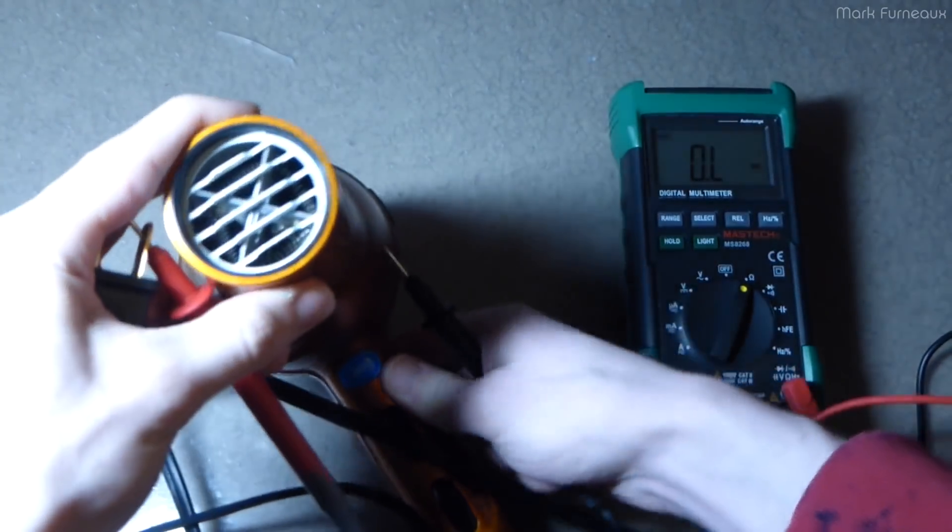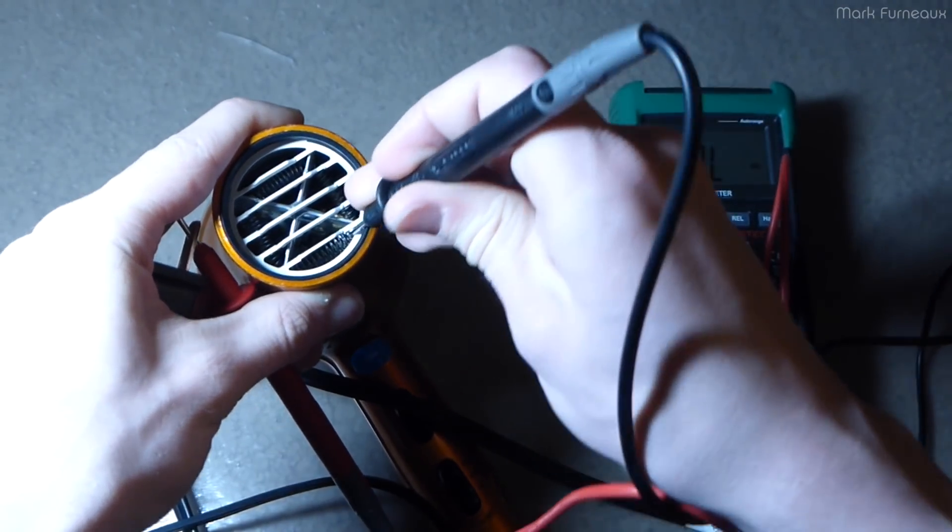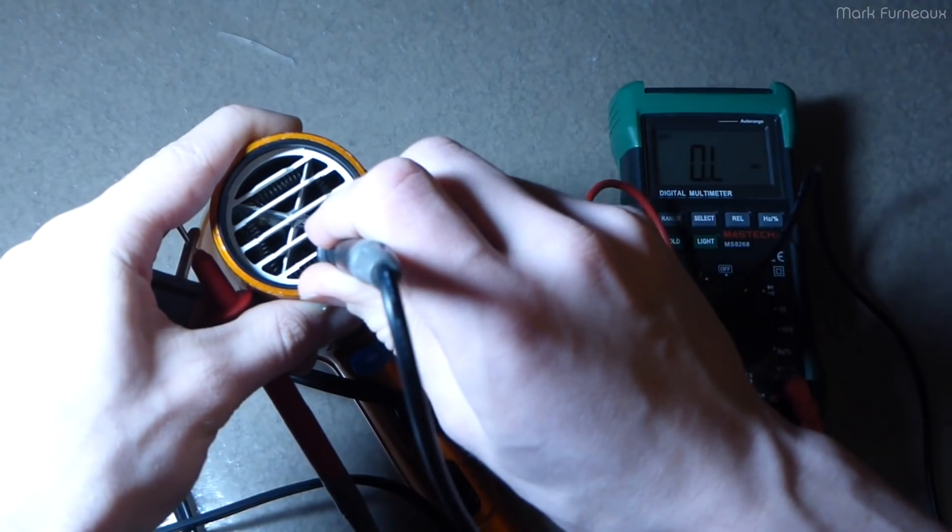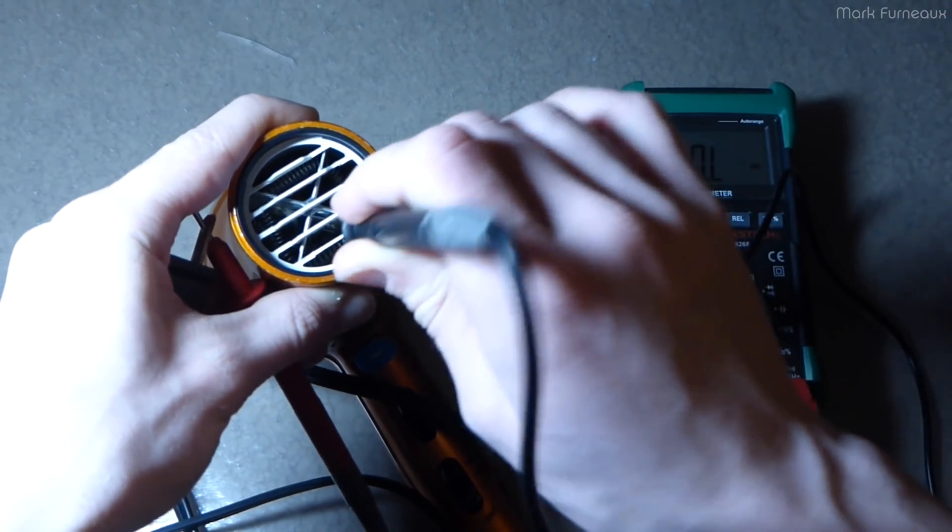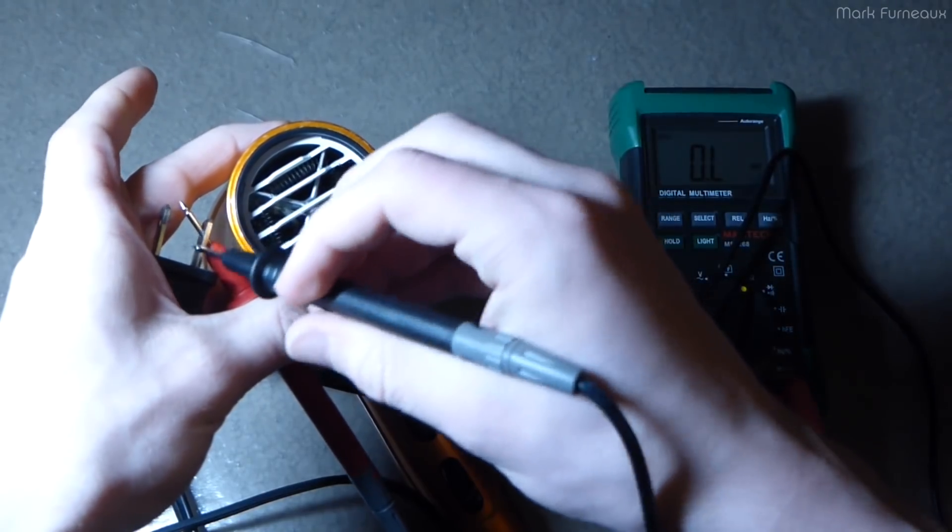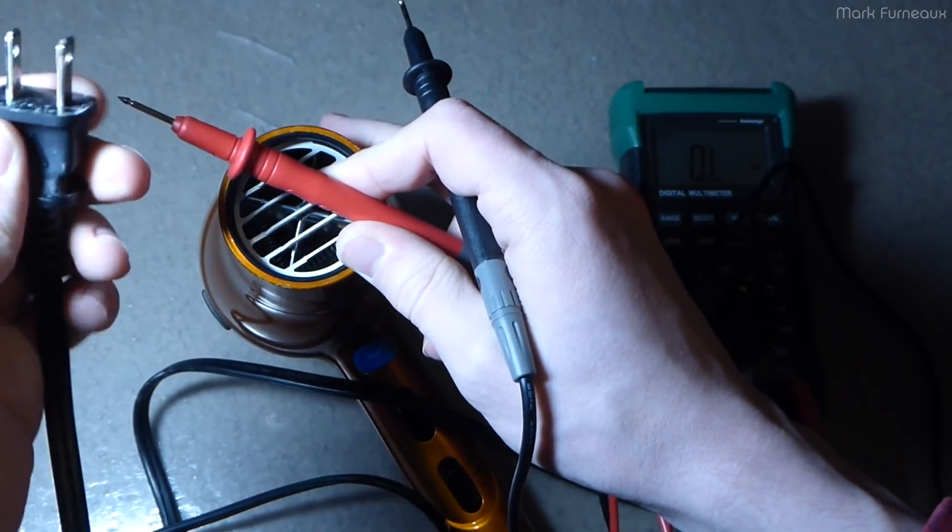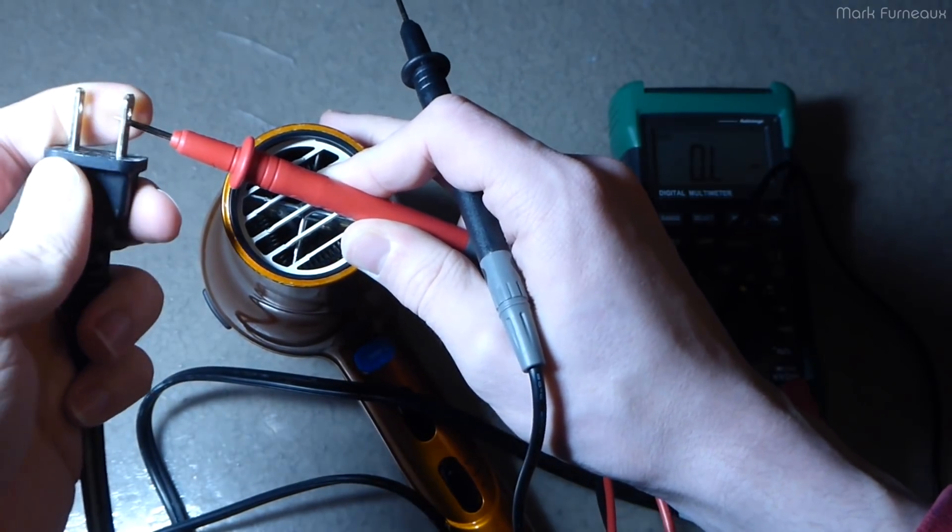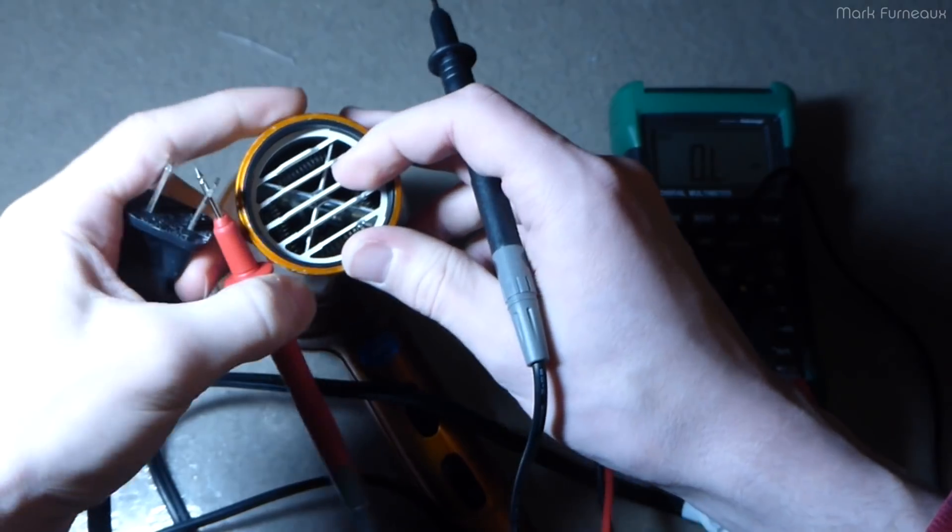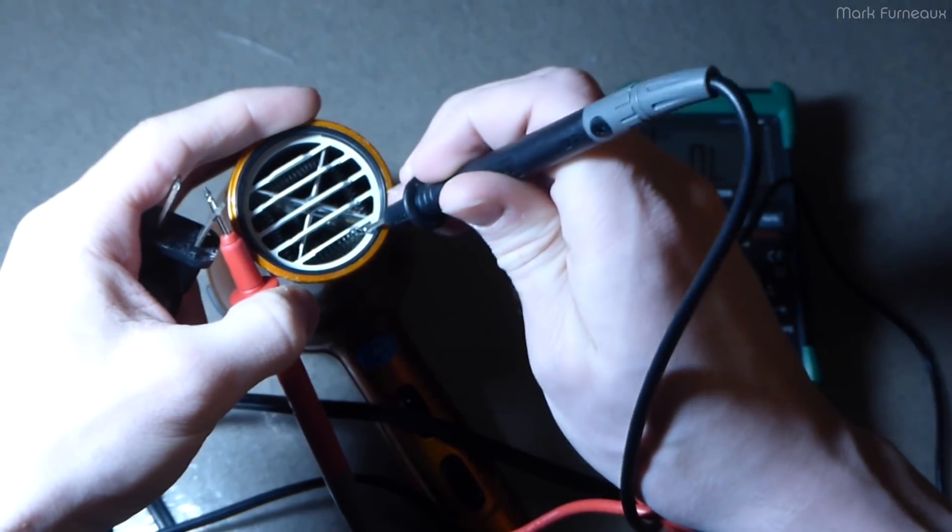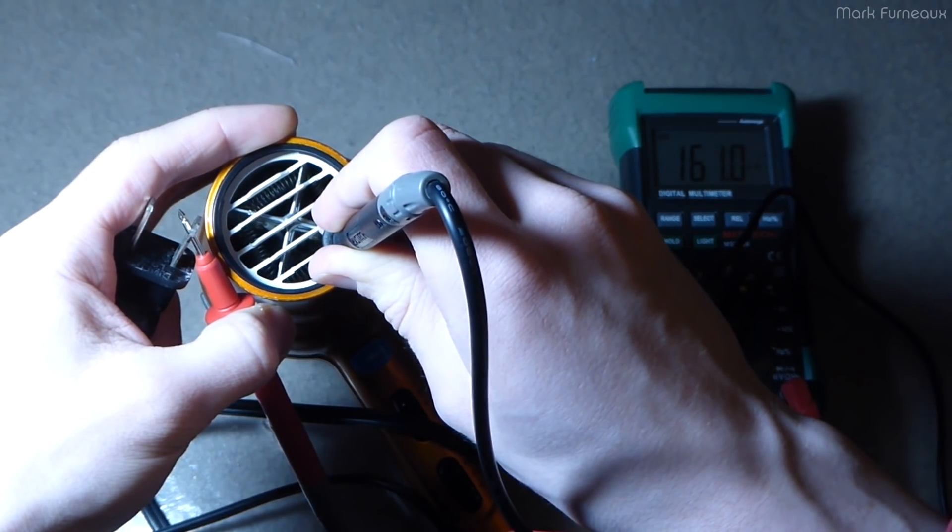I'm going to connect the live pin to the heating element here and we shouldn't see any... There we go. So you see it's still open. So I'm basically isolated from live through the switch of the hairdryer. Now if I were to flip this around and I were to check the neutral, I should see continuity to the heating element in here. And you can see there we do.